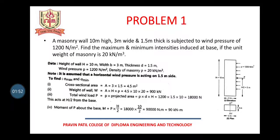So, let's start with the problem. I assume that there might be some doubts in the steps. But once we follow these steps in this numerical, we will be able to understand it thoroughly. So, the problem one states a masonry wall 10 meter high, 3 meter wide and 1.5 meter thick is subjected to wind pressure of 1200 N per meter square. Find the maximum and minimum intensity induced at the base if the unit weight of masonry is 20 kN per meter cube.